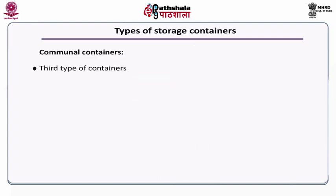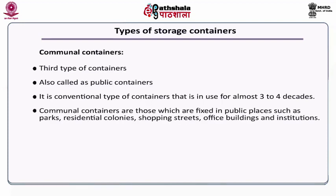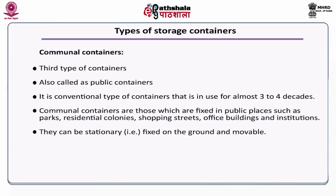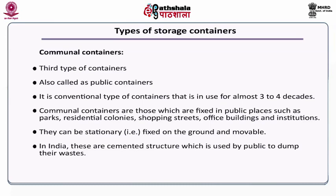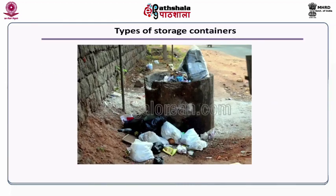A third type of container is a communal container, also called a public container. It is a conventional type of container which you can find in public places like parks, residential colonies, shopping streets, office buildings and institutions. They are stationary containers, fixed onto the ground and cannot be moved. Generally they are cemented structures used by the public to dump their waste. These containers are open and hence they face a lot of problems during rain. This image shows a cemented container called a communal container which is kept in a public area.